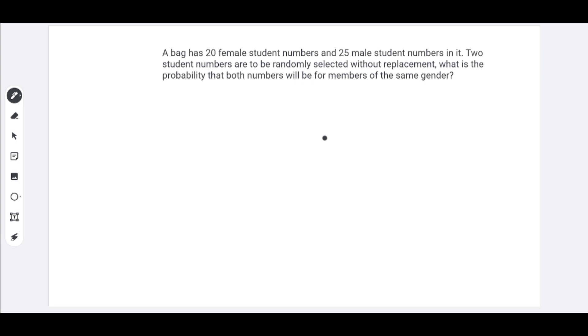A bag has twenty female student numbers and twenty-five male student numbers in it. Two student numbers are to be randomly selected without replacement. What is the probability that both numbers will be for members of the same gender?